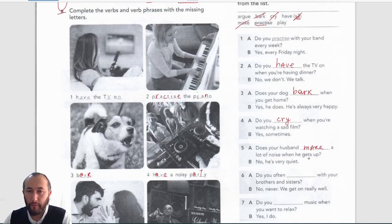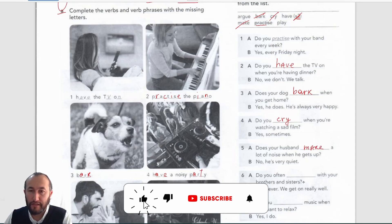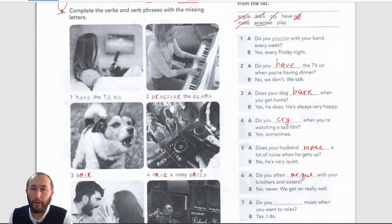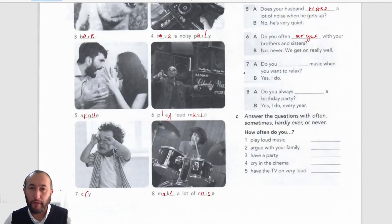Number five: 'Does your husband make a lot of noise when he gets up?' 'No, he's very quiet.' Number six: 'Do you often argue with your brothers and sisters?' — that would be about arguing, it's a cliché thing. Every brother and sister argues at some point in their life. 'No, never — we get on really well.'